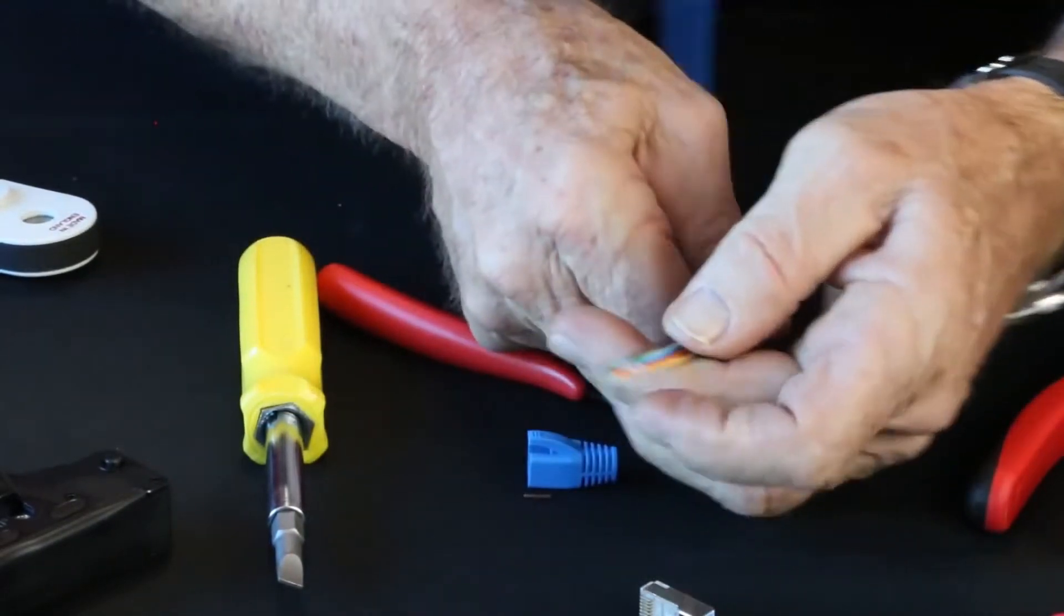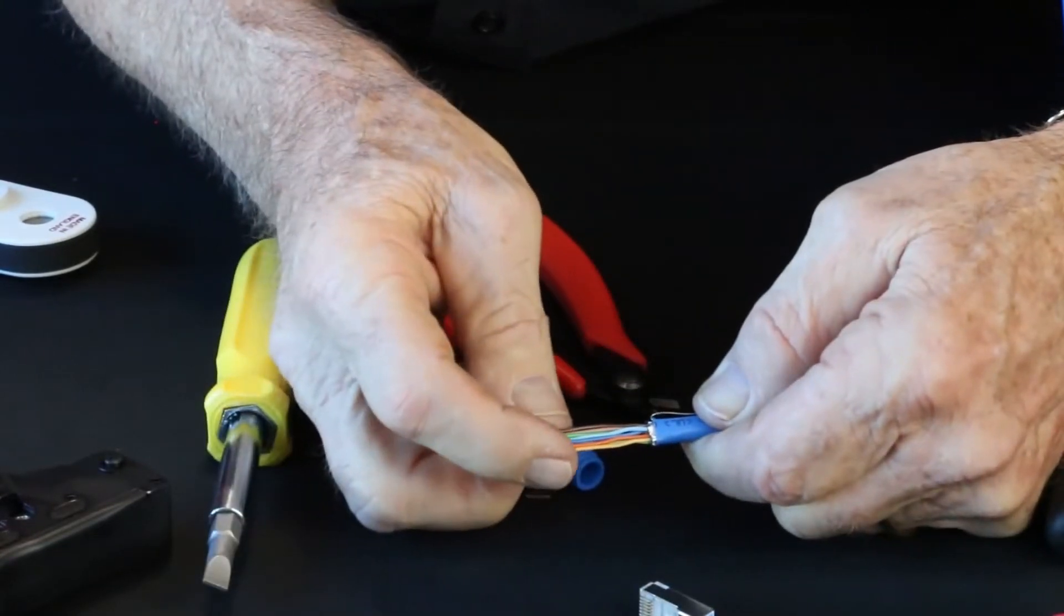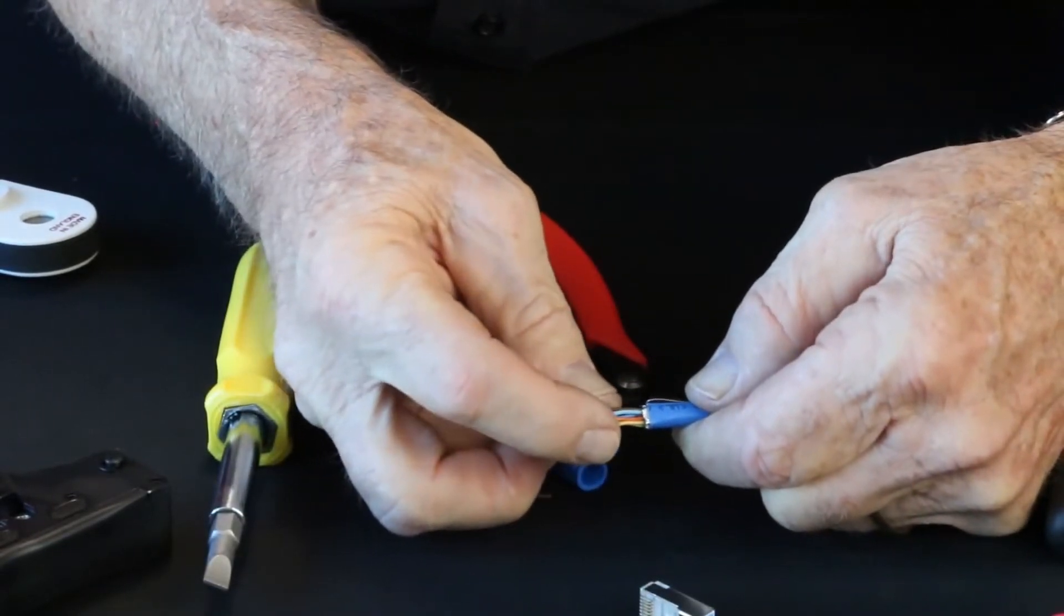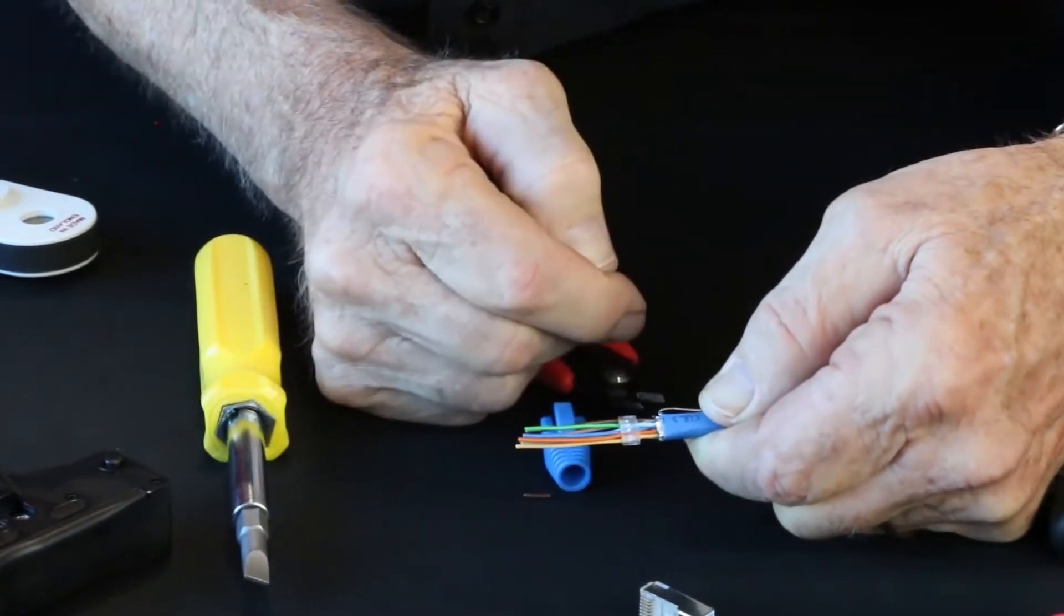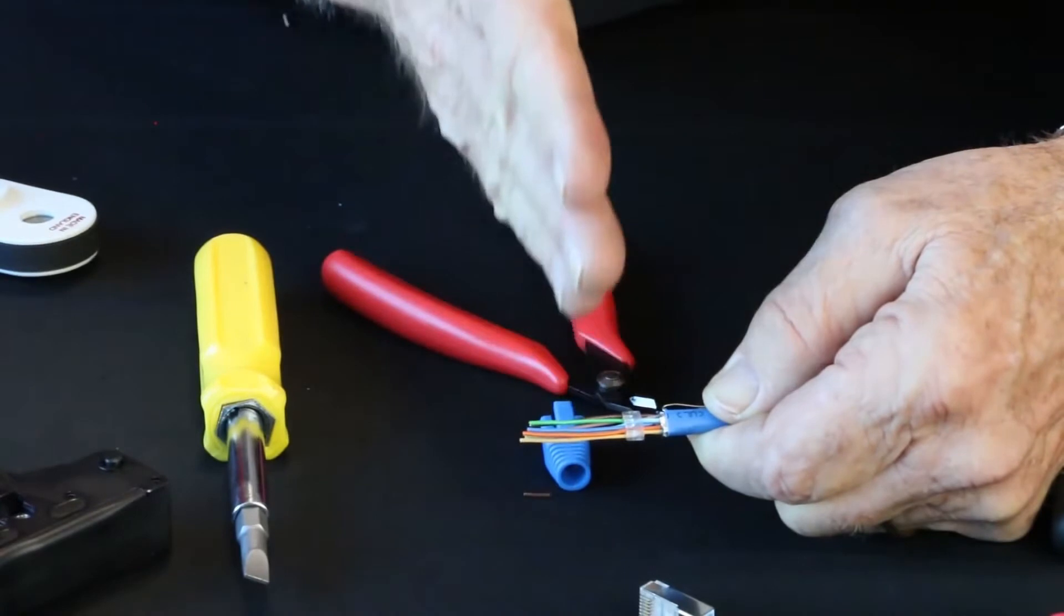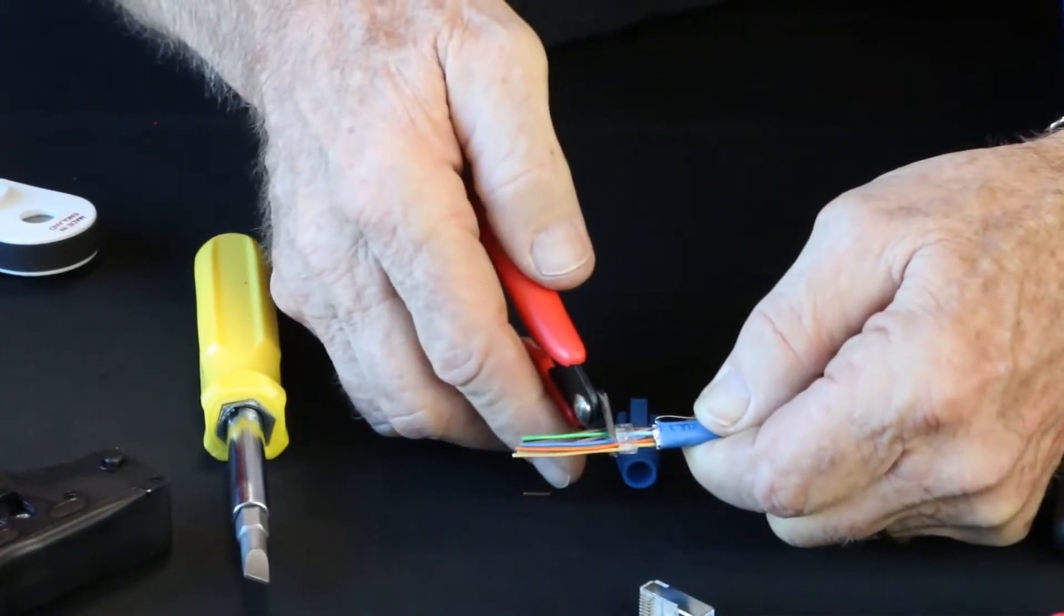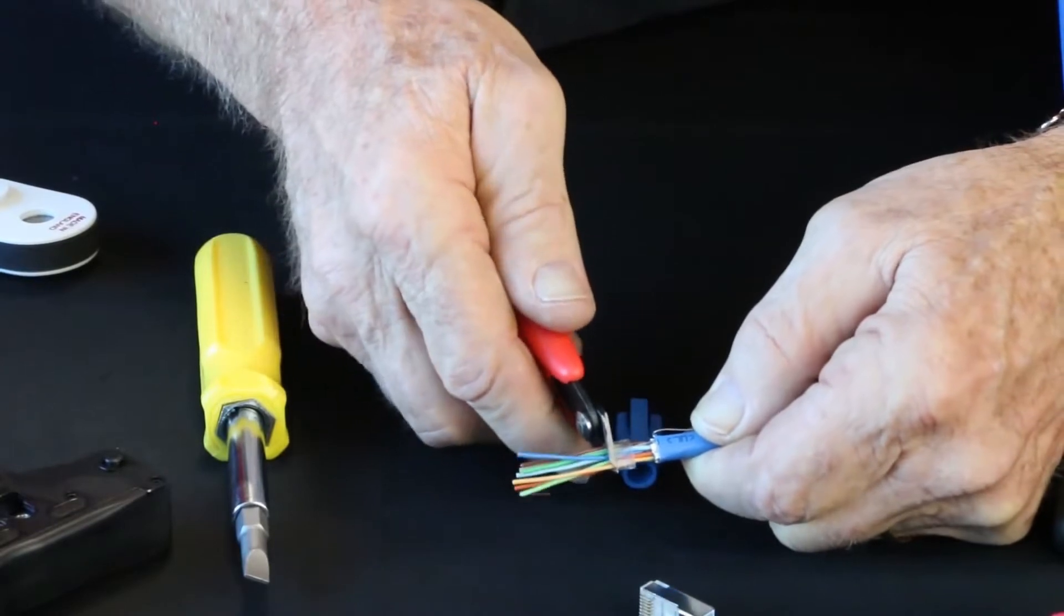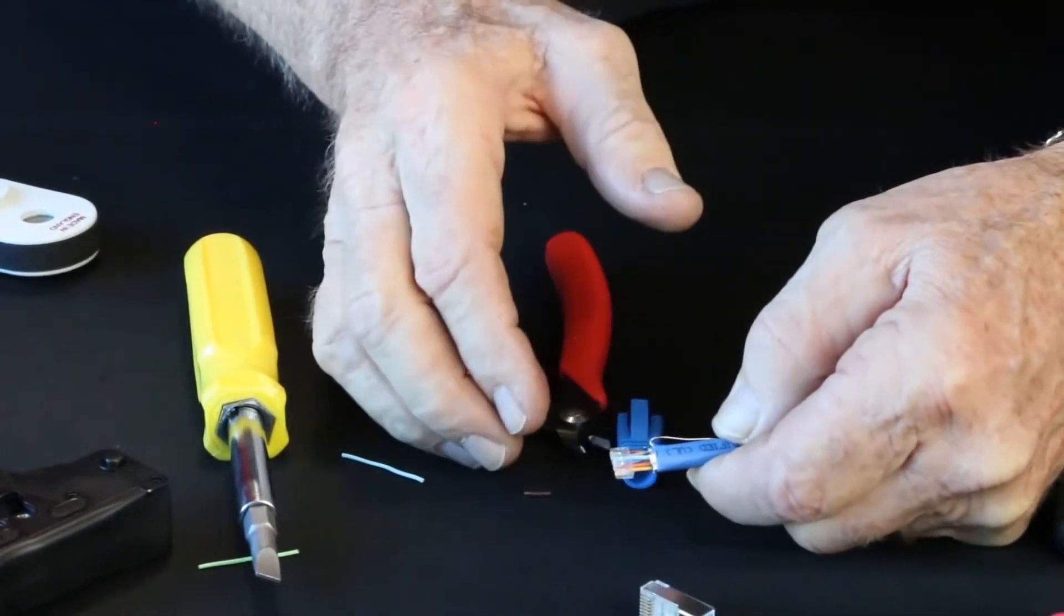And then we're going to take it toward the back, at least a quarter inch, close to 3 sixteenths, toward the jacket. We'll stop right there. So at this point now, I'm going to do a flush cut. We're going to take the cutters, put it right against the bar. And that is the prep that's going to go into the connector.